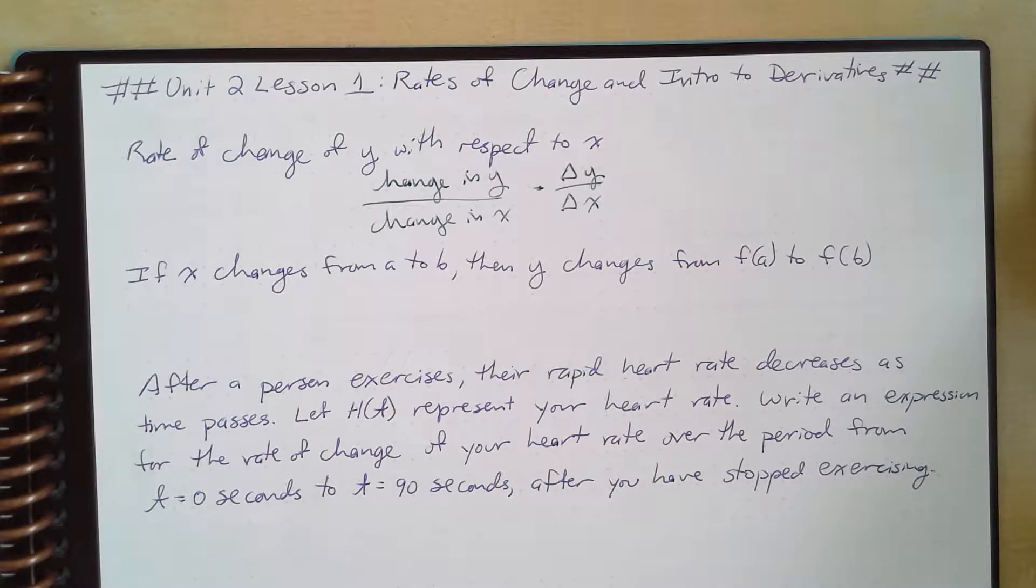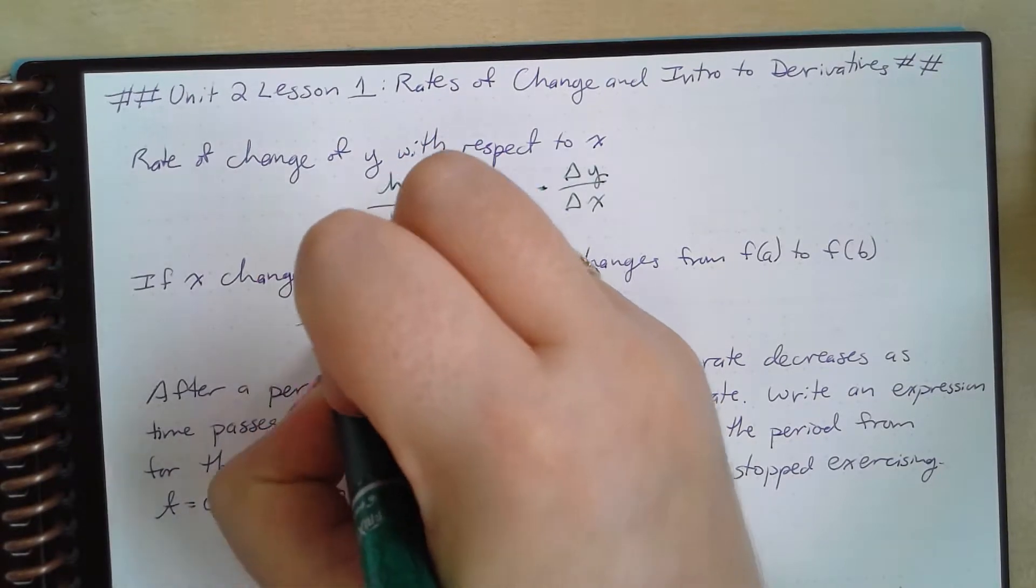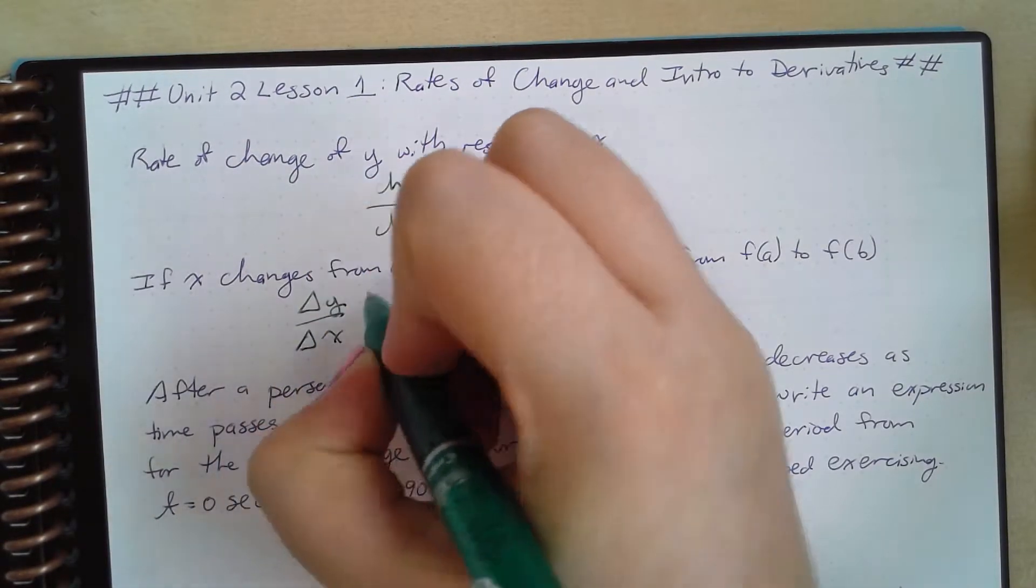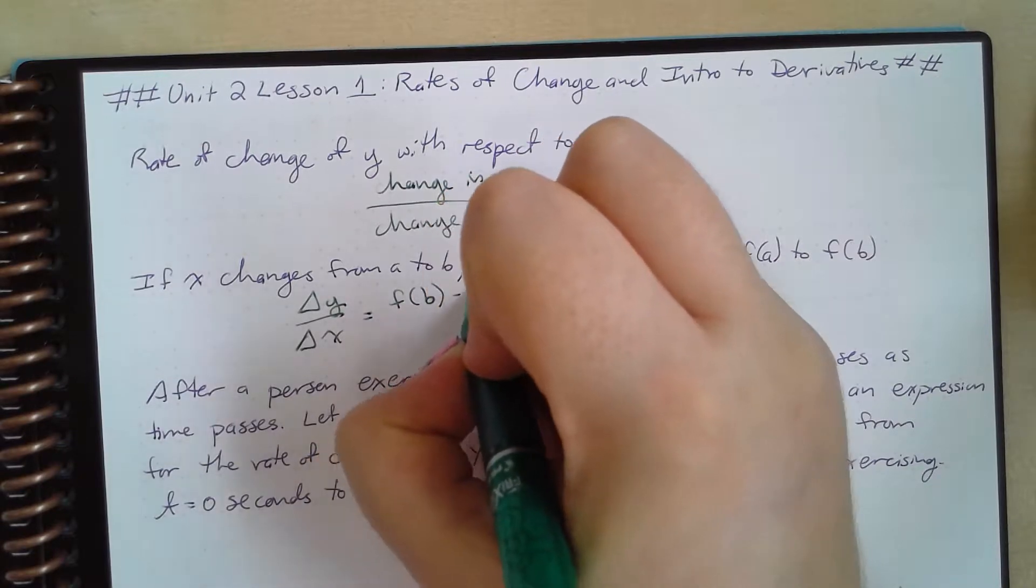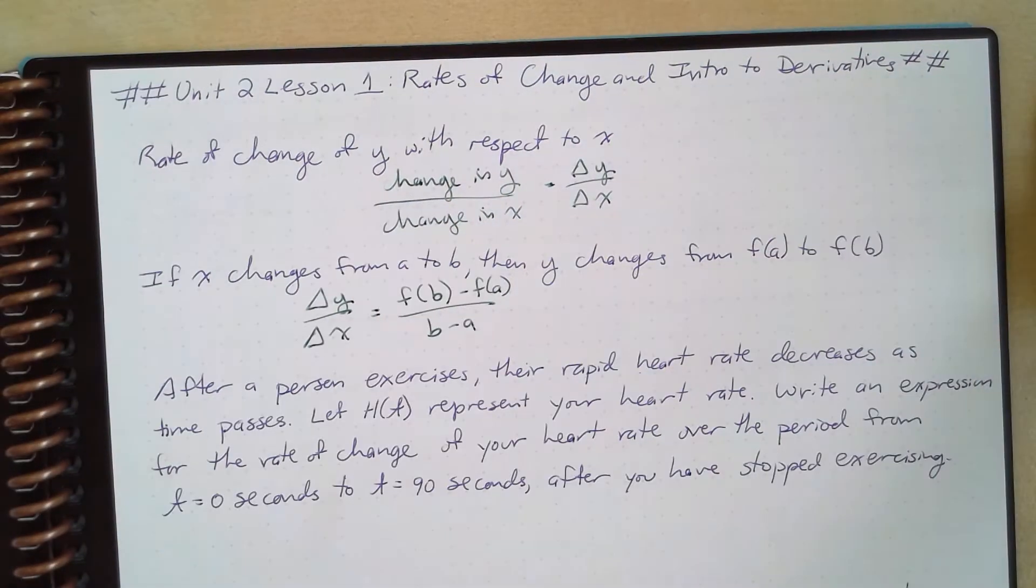Likewise, if you read that x changes from a to b, then y changes from f(a) to f(b). Well, that again is that delta y over delta x, which is just going to be equal to f(b) minus f(a) over b minus a. Again, that slope. You are familiar with that.